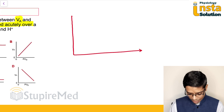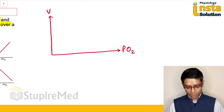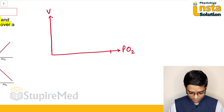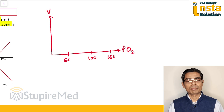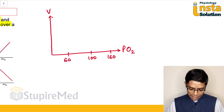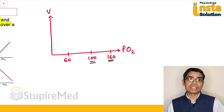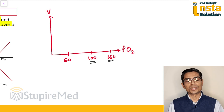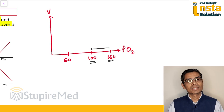Suppose this is the partial pressure of oxygen in the arterial blood on one axis and ventilation on the other. At 160 mmHg partial pressure down to 100 mmHg — if the partial pressure of oxygen is above 100 mmHg — it is not going to stimulate ventilation. So we get an almost flat line in this region.